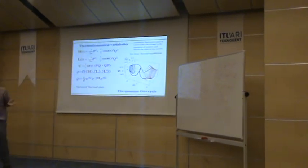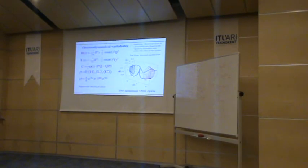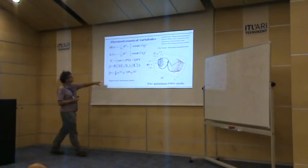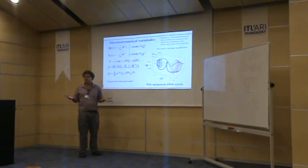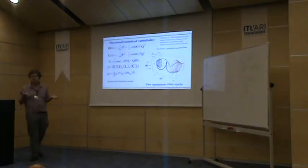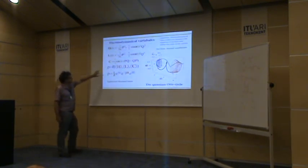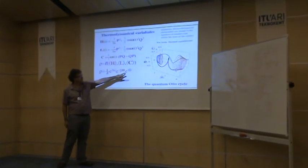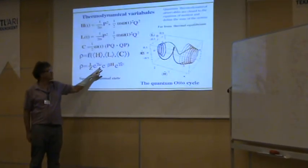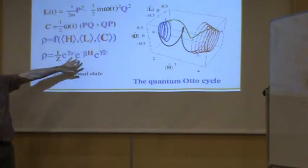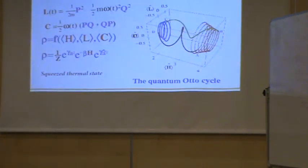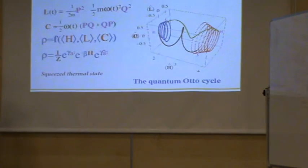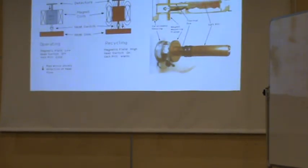Formally, I can use the maximum entropy principle: given expectations of these three operators, I optimize the state subject to these three constraints, and I get what's called a generalized canonical state. It's generalized because we have three operators, not one. This generalized canonical state can also be written as a squeezed quantum state. This form, familiar from quantum optics literature, has a squeezing parameter and an effective inverse temperature.